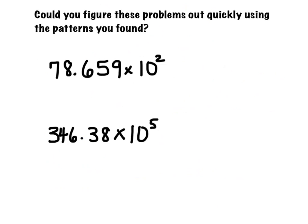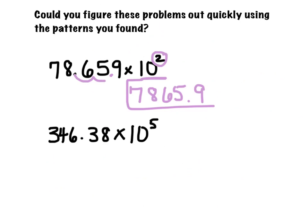So using the pattern that we just found, could we figure out these problems pretty quickly? I think you could. So when you have a problem written like this — if this says times 10 to the second, there are two zeros in 10 to the second, so I'm going to move the decimal over two spots to the right. One, two. I end up with 7,865.9.